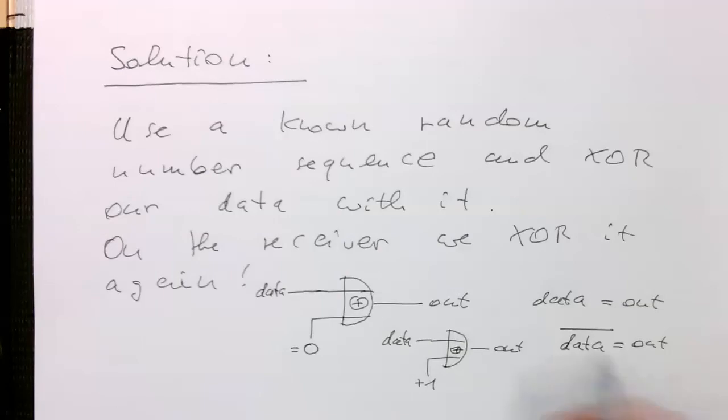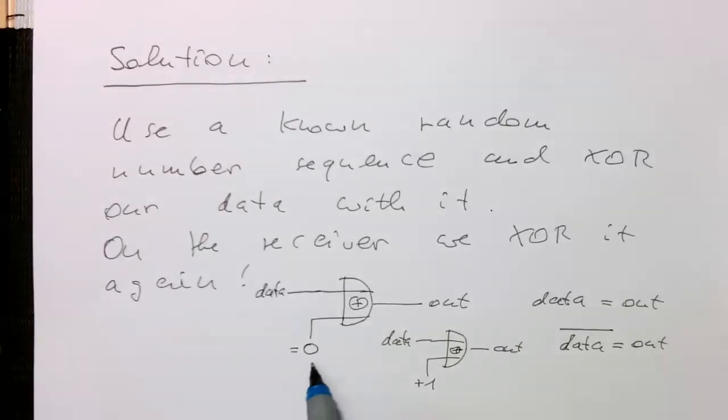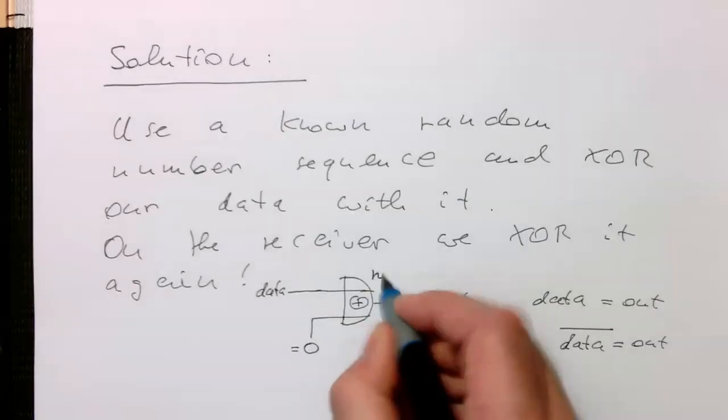then the output is just the inverted of the data. So the XOR is basically like an inverter which can be switched. So zero means there's no inversion and the one means there's inversion. So here, this is no inversion.